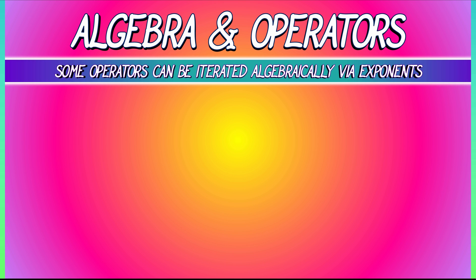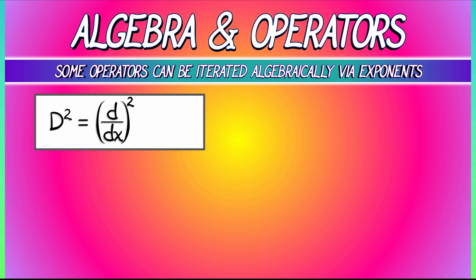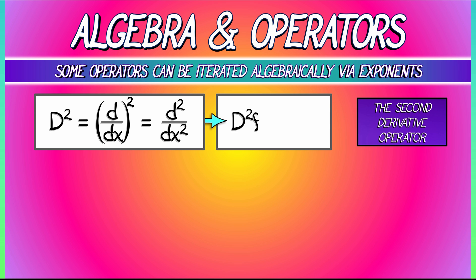So, for example, if we take this ordinary differentiation operator, capital D, we can square it. That does what? Well, it takes d by dx and squares that. That's formally d squared over dx squared. And what is that? That's really the second derivative operator. That is an operator that acts on a function f and gives you the second derivative of f.